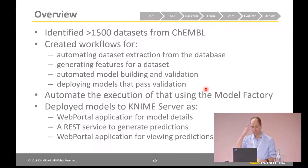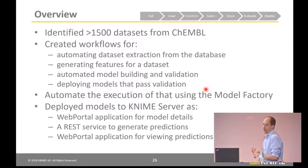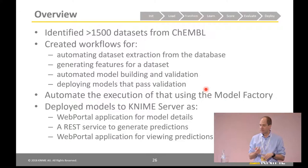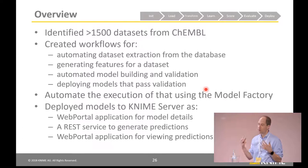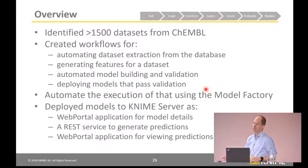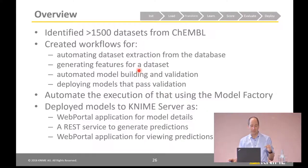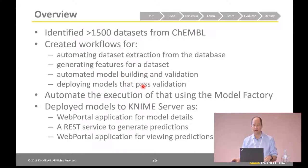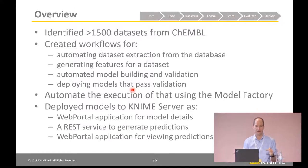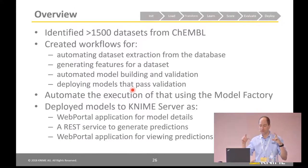So what did we actually do? I mentioned there are 1,500 datasets that come from ChEMBL, which is a public data source. We created workflows for each of the steps: to automatically extract datasets from the database, to automatically generate features for each of those, to automate the model building and validation, to deploy all of the models that pass the validation, and then automate the execution of that whole thing with the model factory. Once we've built the 1,500 models, we deploy those to the KNIME server.